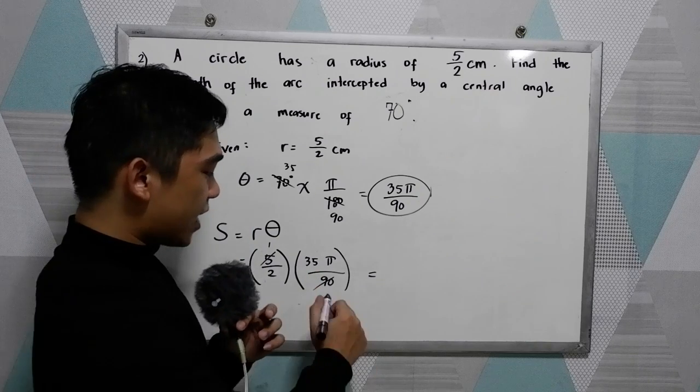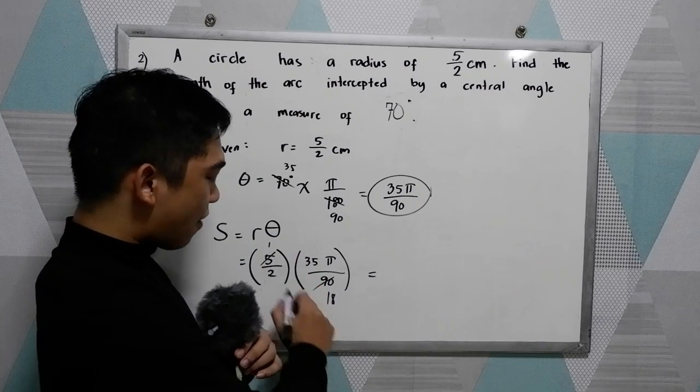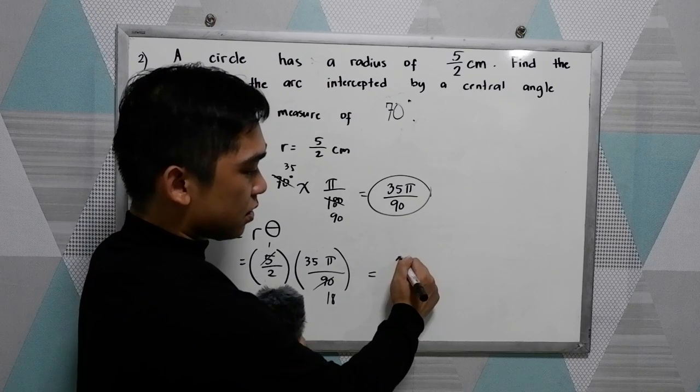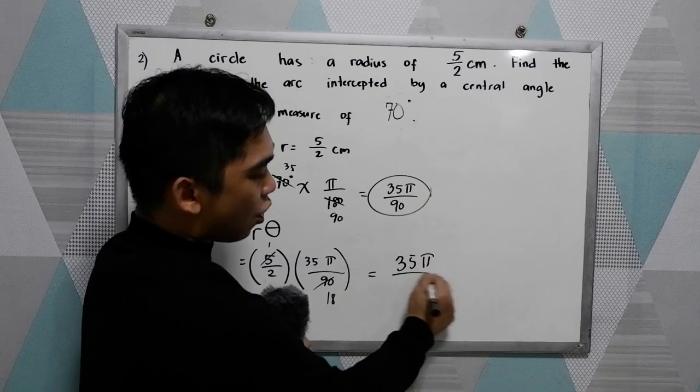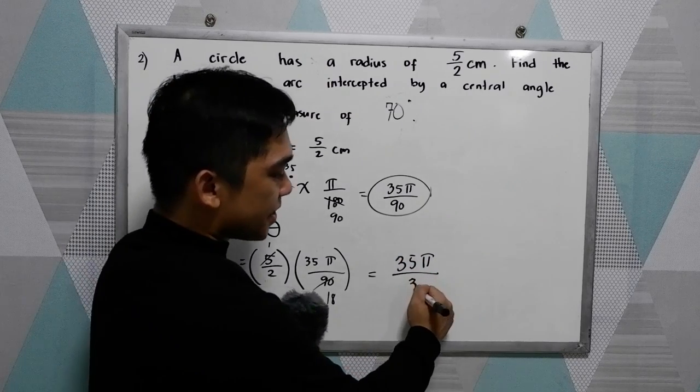So we have 18. Now we have 1 times 35, 35 pi all over 2 times 18, 36.